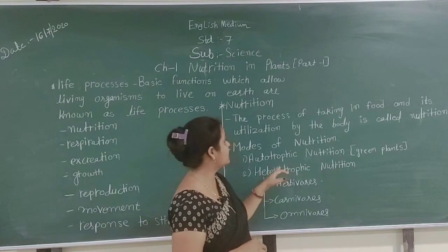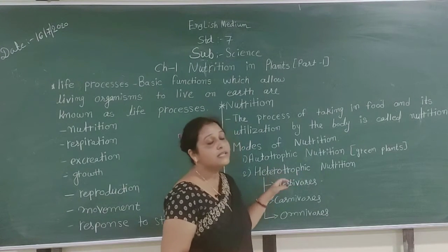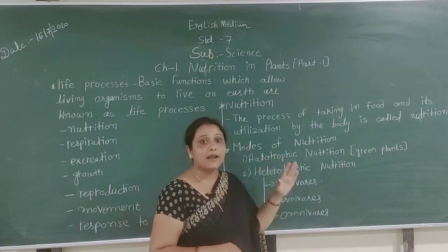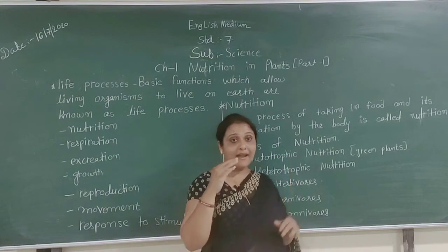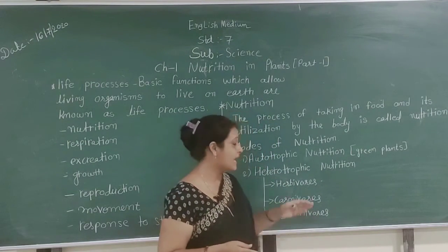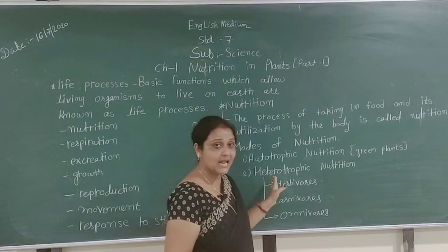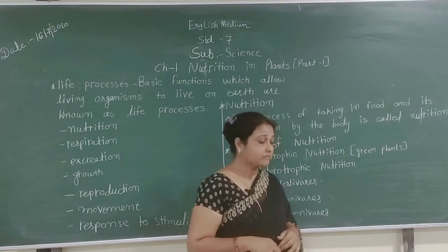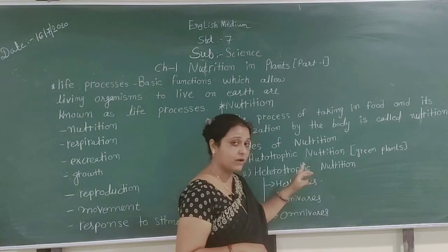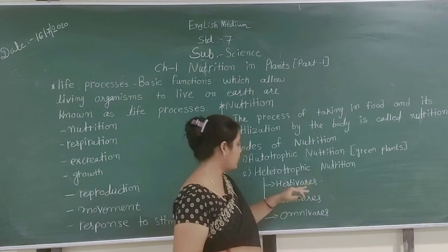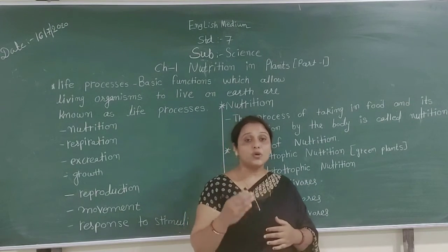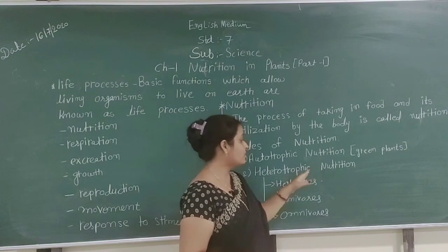In heterotrophic nutrition, human beings, animals, and some plants always depend on other animals or other sources for their food — they cannot make their food by themselves. They always depend on another organism, so they are all called heterotrophic nutrition mode.